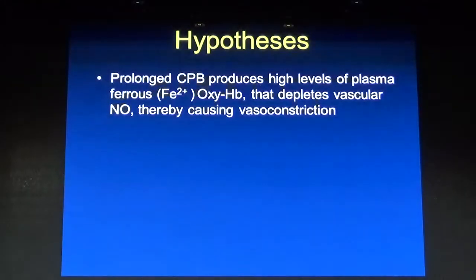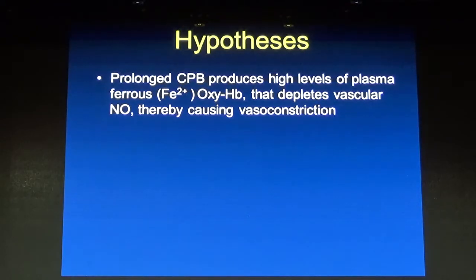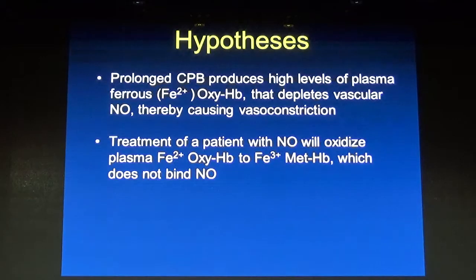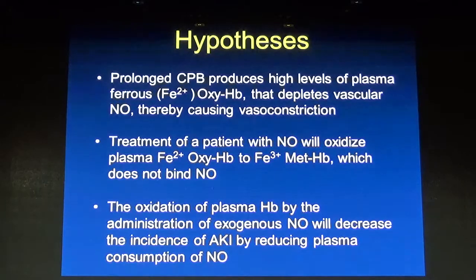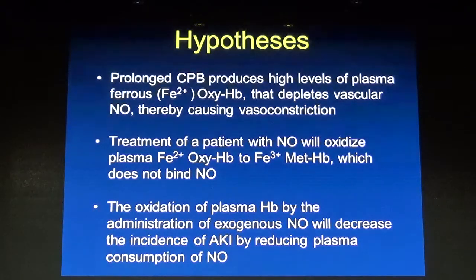Our hypothesis was that prolonged cardiopulmonary bypass produces high levels of plasma ferrous oxyhemoglobin that depletes vascular nitric oxide, thereby causing vasoconstriction and malperfusion. Treatment with nitric oxide will oxidize plasma iron 2+ oxyhemoglobin to iron 3+ methemoglobin, which does not bind nitric oxide. The oxidation of plasma hemoglobin by administration of exogenous nitric oxide will decrease the incidence of acute kidney injury by reducing plasma consumption of nitric oxide.